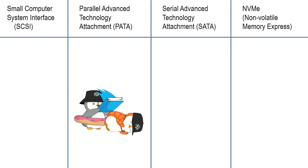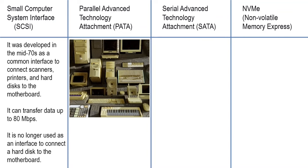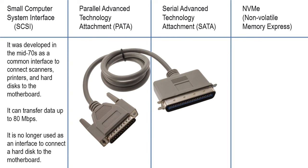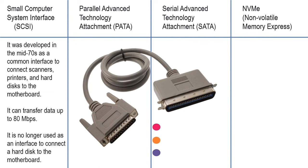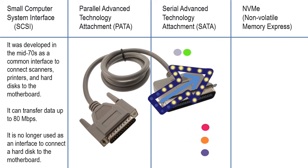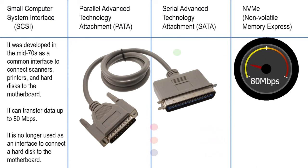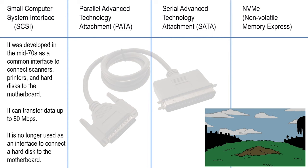SCSI was developed in the mid-1970s as a common interface to connect multiple devices to the motherboard. It uses a SCSI cable and was used as the default interface to connect scanners, printers, and hard disks before dedicated interfaces were developed. Initially developed for parallel transmission, it was later upgraded for serial transmission as well. Serial SCSI offers faster data transmission speeds than parallel SCSI, capable of transferring data up to 80 megabits per second. SCSI cables are no longer used in personal computers to connect hard disks.